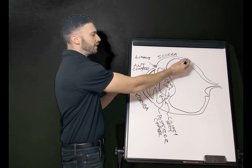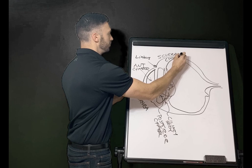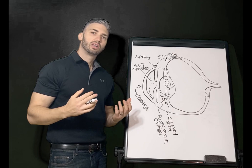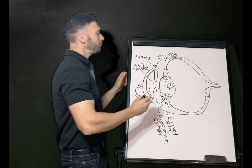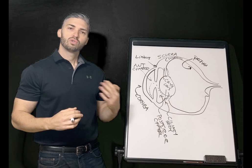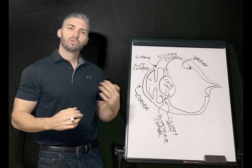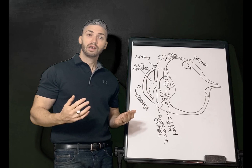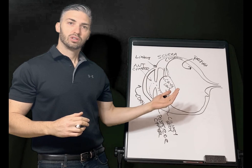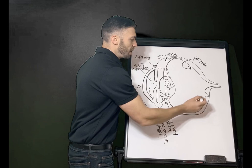Working our way inward: the sclera is the white fibrous part of the eye. Inside that we have the choroid, the middle layer of the eye — it's dark brown in color and primarily a vascular layer, supplying a lot of nutrition for the eye. Then our innermost layer is the retina, our light-sensitive layer that has all the photoreceptor cells. We have approximately six to seven million cone photoreceptor cells, responsible for day vision, color vision, and sharp central vision, and about 120 million rod photoreceptor cells, responsible for night vision, peripheral vision, and seeing in shades of gray.